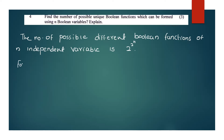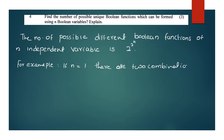For example, if n is equal to 1, there are two combinations: 0 and 1. The number of boolean functions is equal to 2 raised to 2 raised to 1, that is equal to 4. These 4 functions are unique.